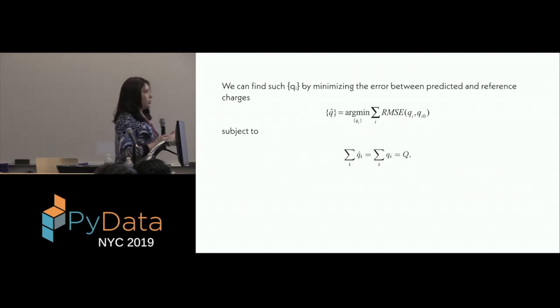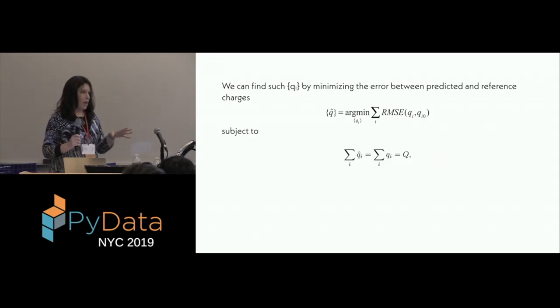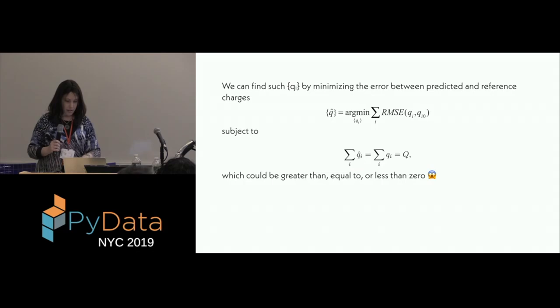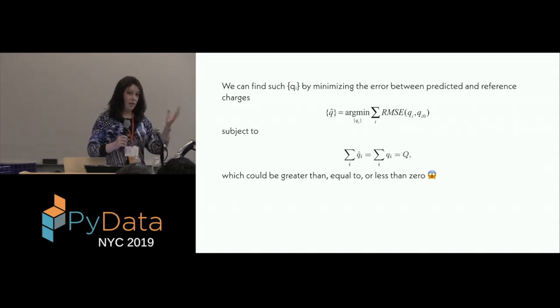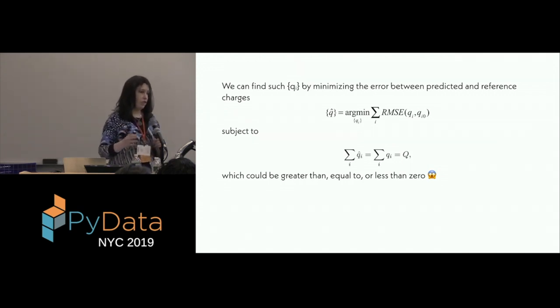Now, what we can do is, we can find the partial charges on each atom by minimizing the error between some reference charge and the predicted charge, and this needs to be subjected to a constraint of the sum of all these partial charges need to add up to the total charge of the molecule. Now, the problem is that this total charge can be either negative, or positive, or zero. So theoretically, we can do this optimization without the constraint, and then take the excess charge and spread it evenly over the molecule, and people have done that. However, experimentally, when we tried it, the RMSEs were just too high for it to be acceptable.